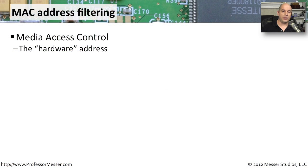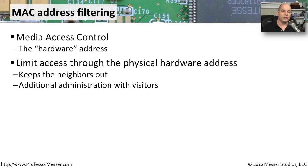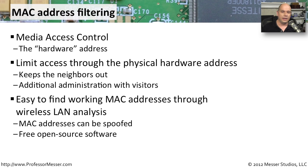One option in the configuration of your router is something called a MAC address filter. MAC stands for Media Access Control — it's the hardware address, the physical address on wireless devices connecting to your network. A MAC address filter allows you to limit who can communicate into your wireless network, keeping neighbors or nearby people out of your access point or router.